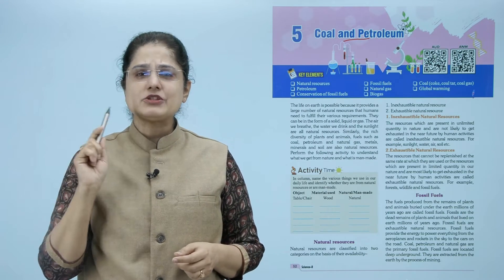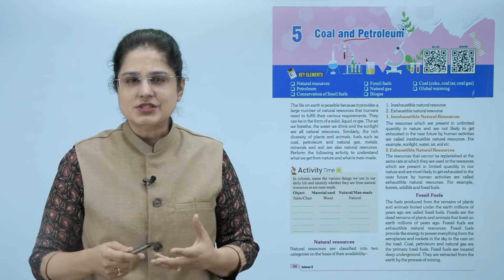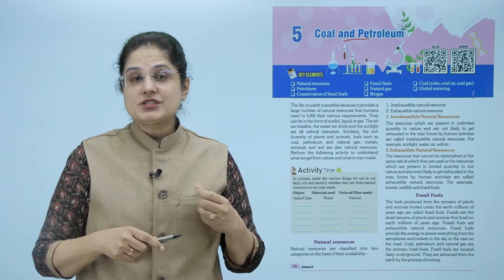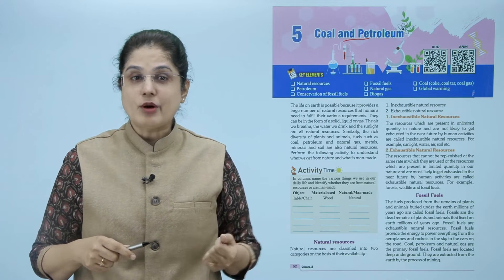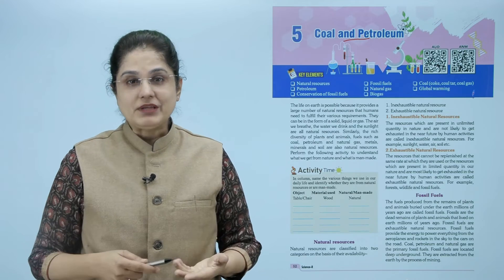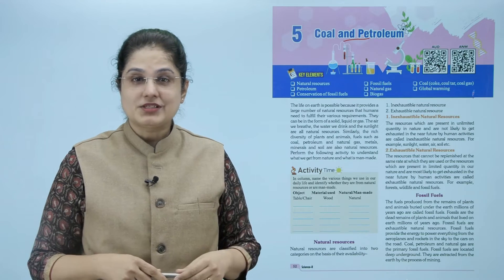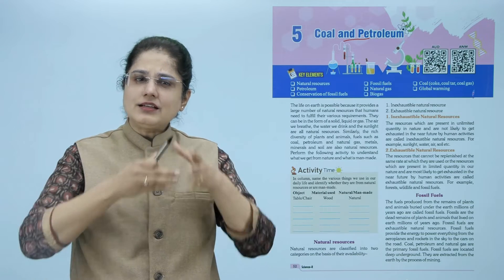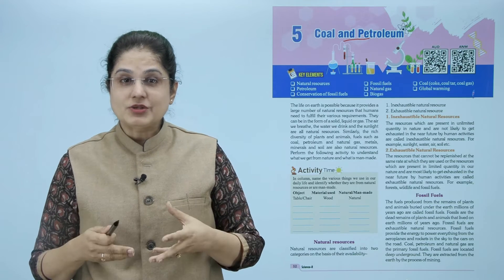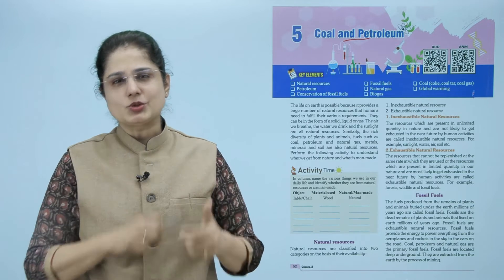हमारे आसपास जो life possible है वो क्यों है? क्योंकि earth पे इतने सारे natural resources हैं कि हमारी सारी requirements पूरी हो जाती हैं। ये जो resources हैं ये solid, liquid और gas के form में हैं। जो air जिससे हम सांस लेते हैं, sunlight - ये सब natural resources हैं। इसी तरह अलग-अलग तरह के plants, animals, fuels जैसे कि coal, petroleum, natural gas, metals, minerals, soil - ये सभी natural resources हैं।